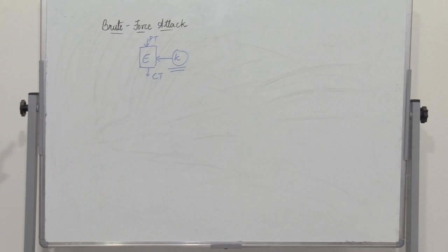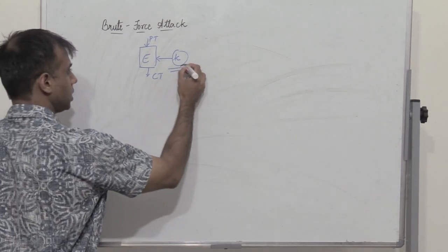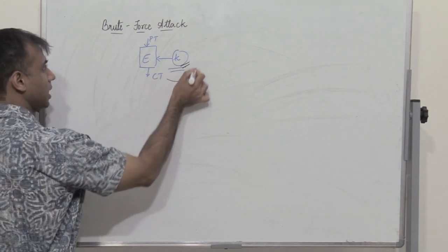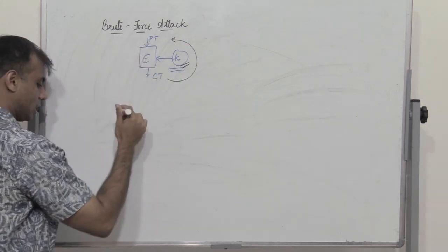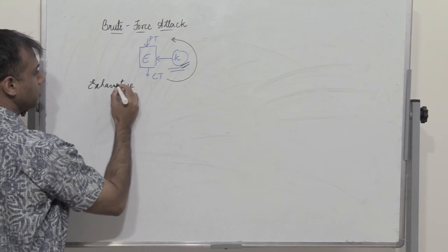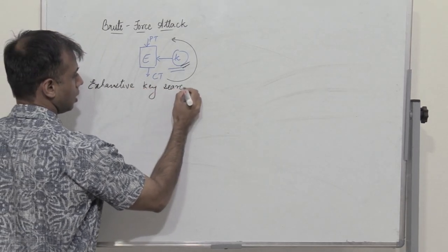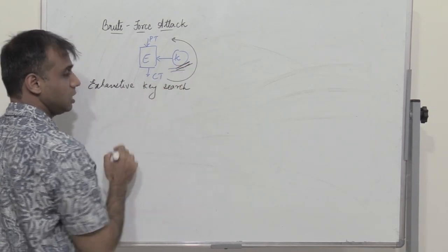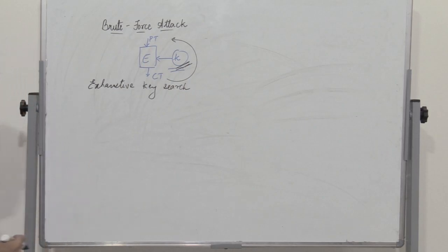So what does a brute force attack do? In a brute force attack, the attacker would try all possible variants of the key or password and would try to get the plain text. The attacker performs an exhaustive key search to identify the key which was used to produce the ciphertext, so that he can decrypt and get back the plain text.